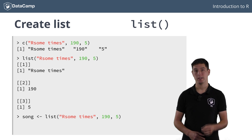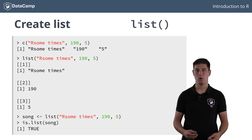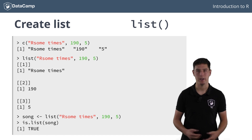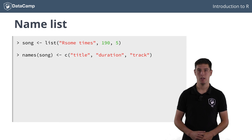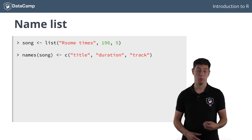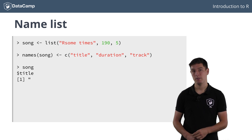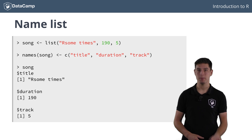We can assert that this song variable is a list using the is.list() function. Storing the song information without any names is not really clear, so let's assign some labels with the names() function. To assign the names, you still use a character vector, even though we're working with lists now. Printing song again shows that the indices in double square brackets have changed to the names of the list elements. This looks much nicer.